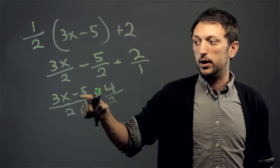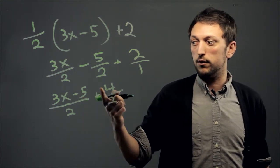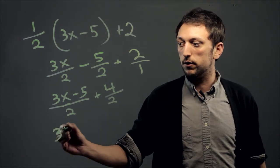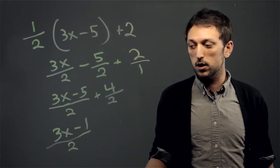And that way we can say it's 3x minus 5 over 2 plus 4 over 2 is really minus 5 plus 4 is minus 1. So 3x minus 1 over 2 is our answer.